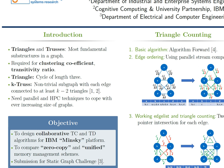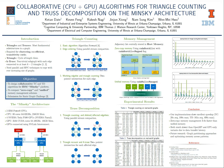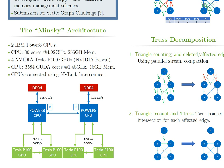Our solution for this competition was to design collaborative algorithms that use both CPU and GPU threads for triangle counting and truss decomposition, specifically targeted for the IBM Minsky platform. Through this project, we also benchmarked and compared the performance of two memory management schemes: zero copy memory and CUDA unified memory. We used the Minsky machine given to the C3SR group by IBM. It contains two Power8 CPUs with 80 cores each and four NVIDIA Tesla P100 accelerators built on the Pascal architecture, connected by the NVLink interconnect.